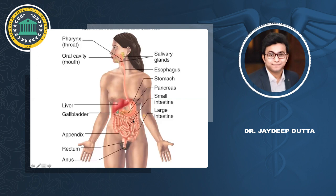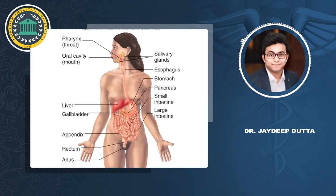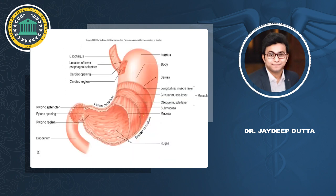There are three types of peristalsis: primary, secondary, and tertiary. I will not go into detail on each because that is the physiology teacher's domain — I will only give a brief outline. After peristalsis comes the esophagus, which plays a very vital role in the GIT.